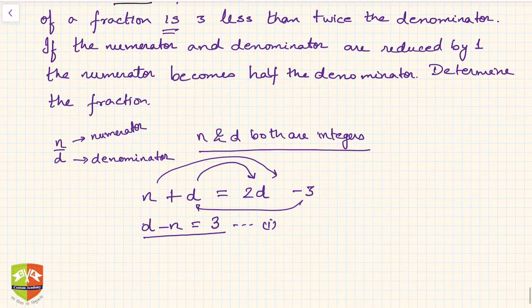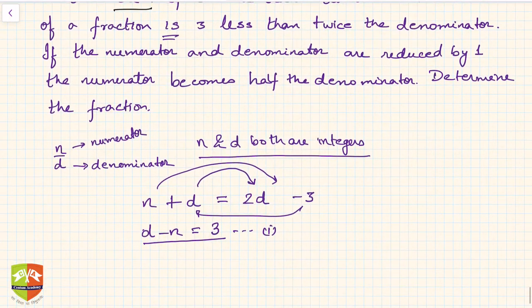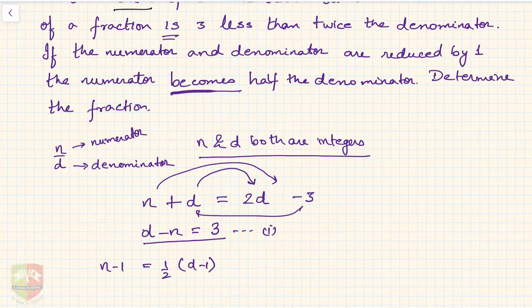Then let us go to the second statement. What is the second statement? It says if the numerator and denominator are reduced by 1, the numerator becomes half the denominator. That means if numerator and denominator are reduced by 1, the numerator becomes half the denominator.